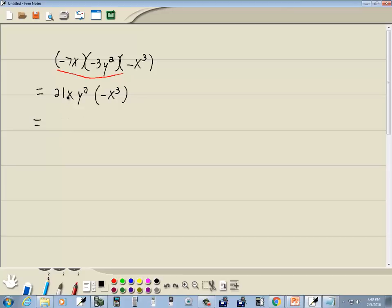First off on our sign, we got a positive times a negative. That's going to give us a negative. And then we got 21.